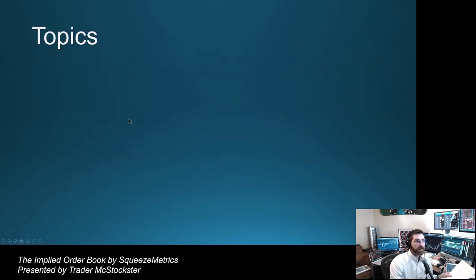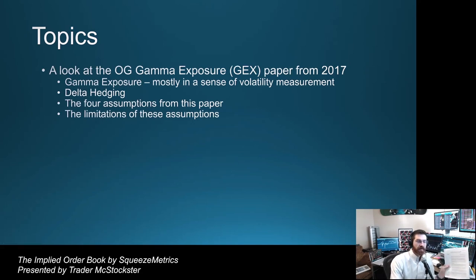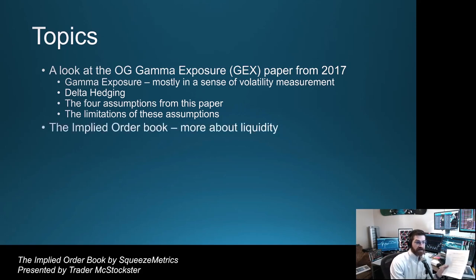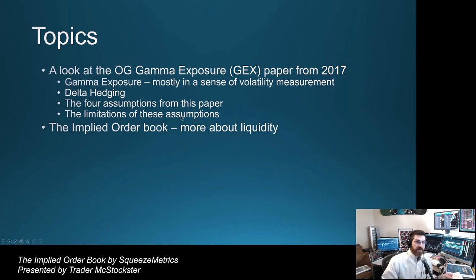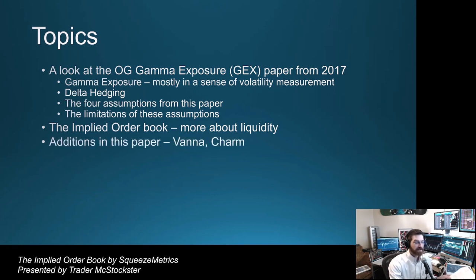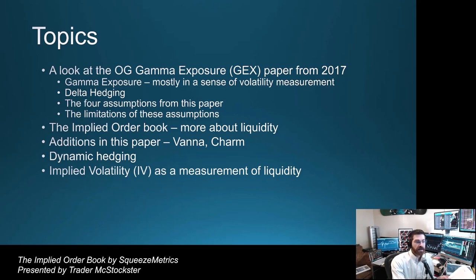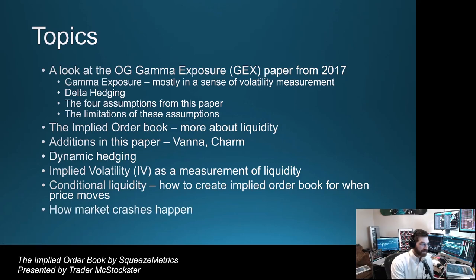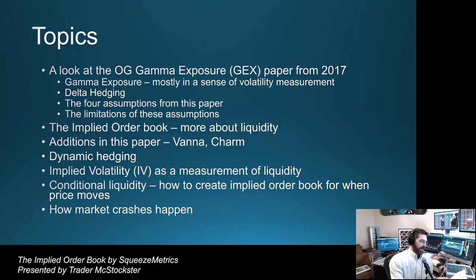Topics I want to go through today: we're going to look at the OG GEX paper and talk about gamma exposure, mostly as a volatility measurement. They talk about delta hedging and four assumptions that are pretty important to understanding this paper, then we'll go over the limitations. Then we'll get into the implied order book, which is really more about liquidity. The first paper is about volatility; the second one's about liquidity, which is also about volatility, but they really dialed it in on the second paper. Additions in this paper include Vanna, Charm, dynamic hedging, implied volatility as a measurement of liquidity, and conditional liquidity.